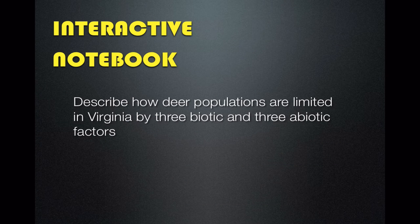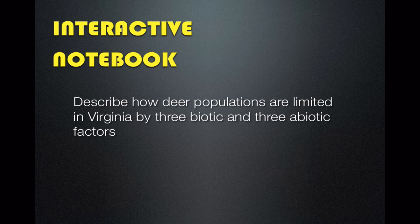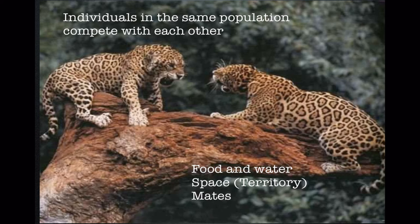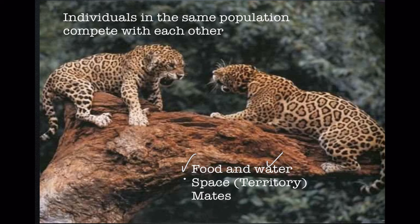It's important to know the difference between biotic and abiotic limiting factors. For example, are deer limited in Virginia by biotic and abiotic factors? Of course they are. Individuals within a population — for example, these two jaguars — can compete with each other. They're the same species but they're competing. Competition can happen within a population between individuals of the same species, or between two different species. Organisms frequently compete over food, water, space, and access to mates.